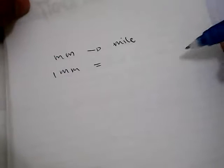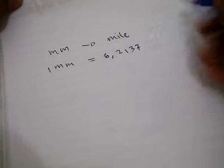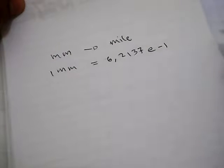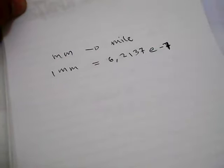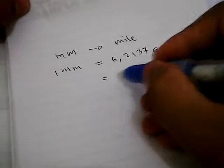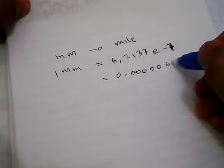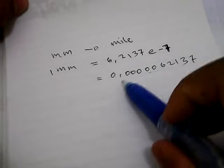The first thing we need to know before we solve an example problem is that one millimetre is equal to 6.2137E-7 — that's the calculator way to write it when dealing with a lot of decimal numbers. Actually it's equal to 0.000062137. It's the same number, just another way to write it.